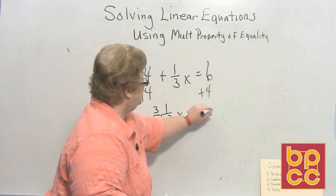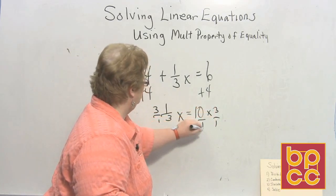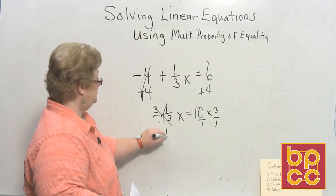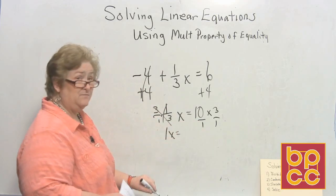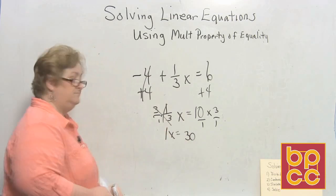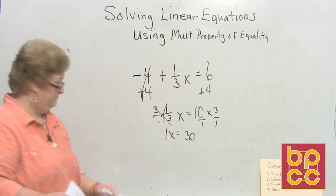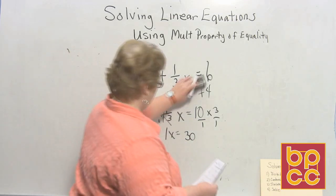Now that it's set up and everybody's in its proper location, I can do my reciprocal. I can multiply 3 over 1 over here, 3 over 1. This clears out to x or 1x, and 10 times 3 is 30. Nice and easy, isn't it?